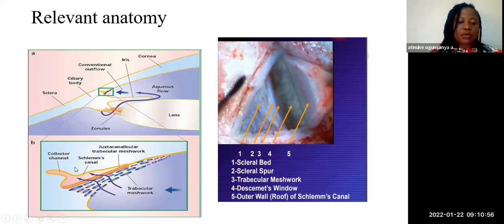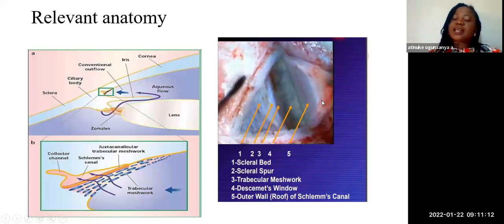Fluid drains essentially to Schlemm's canal, to the collector pack channels, and then to the systemic circulation. The figure on the right shows the scleral bed, the scleral spur, and the trabecular meshwork.